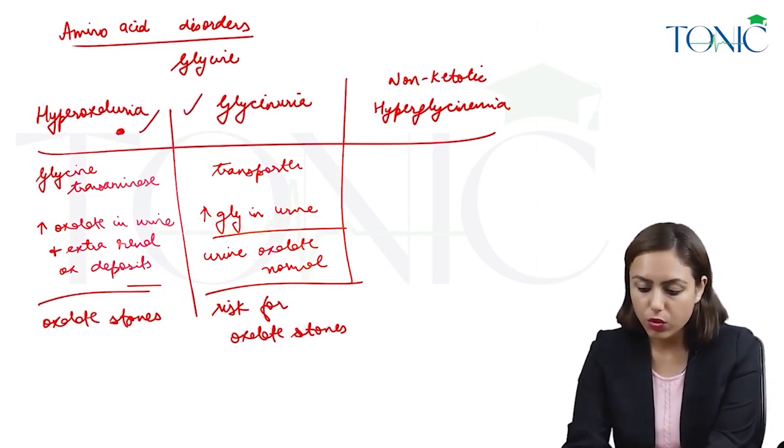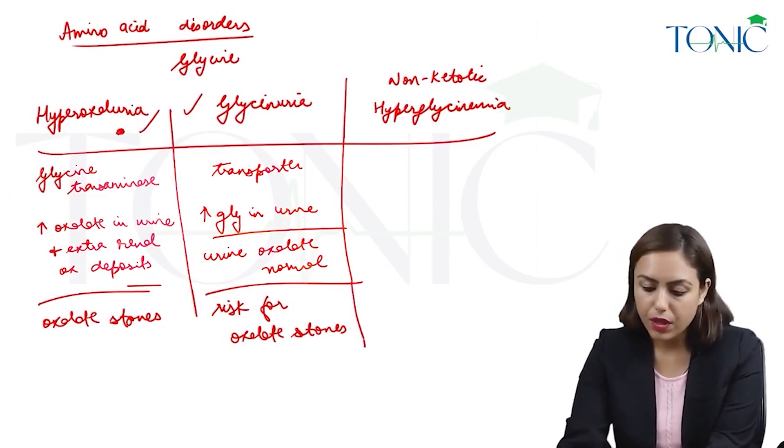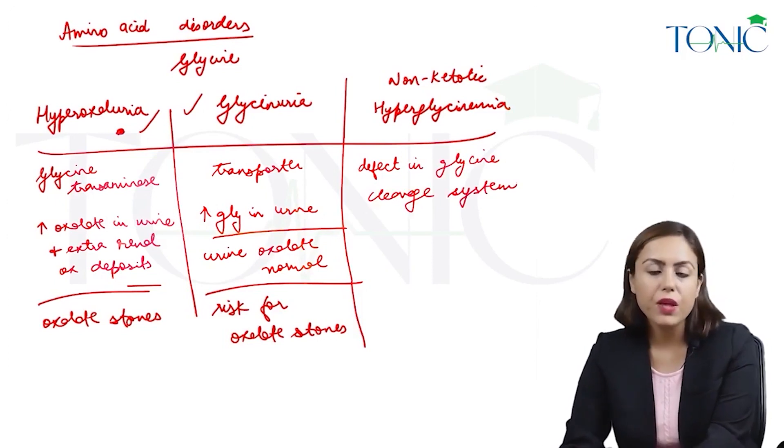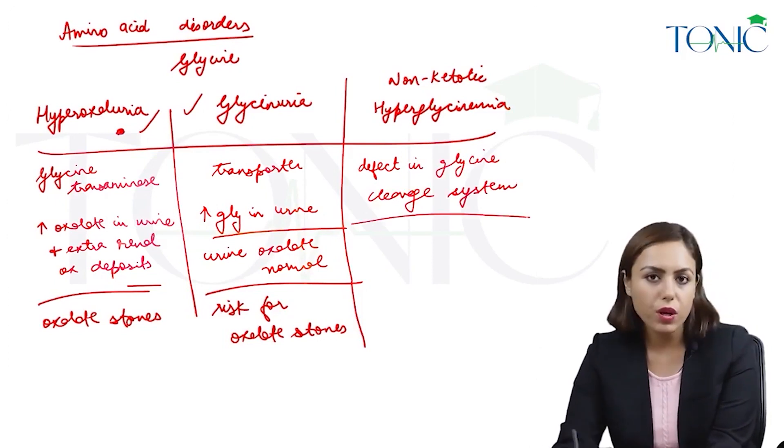Then the third one is non-ketotic hyperglycinemia. There is defect in glycine cleavage system. So, glycine is not broken down in the body.